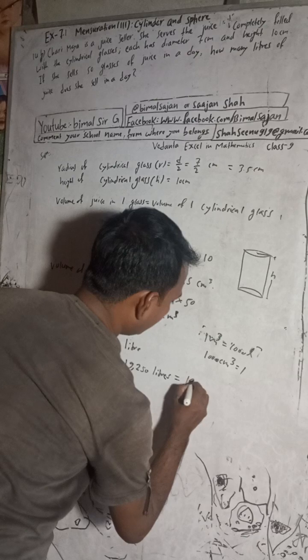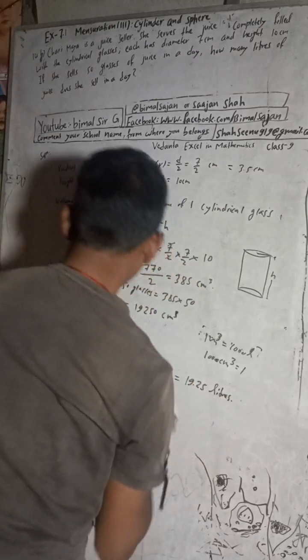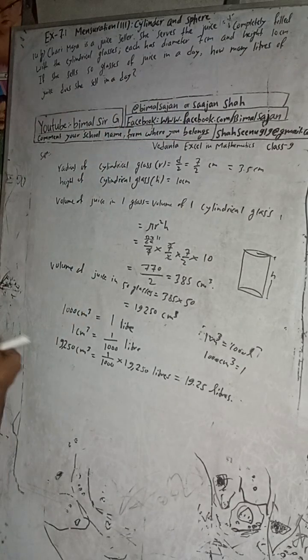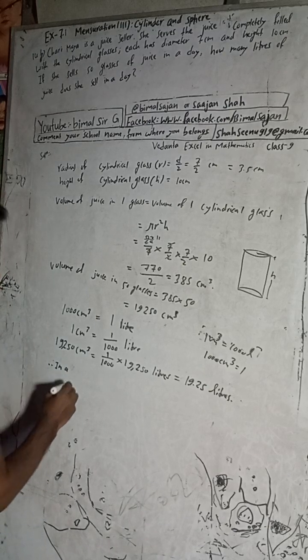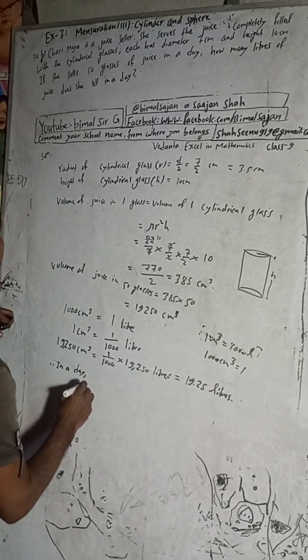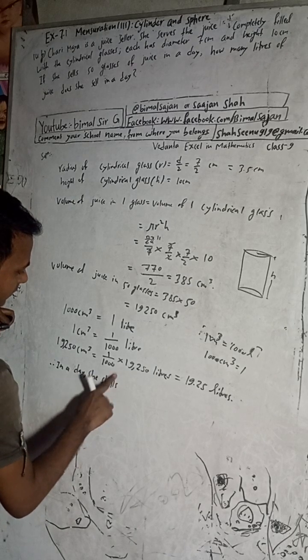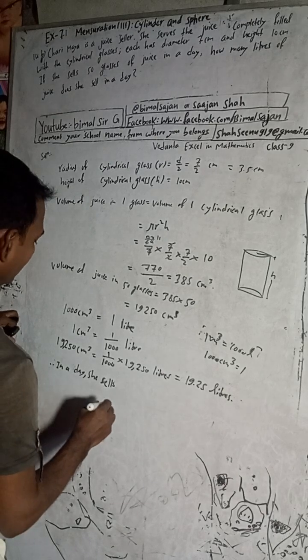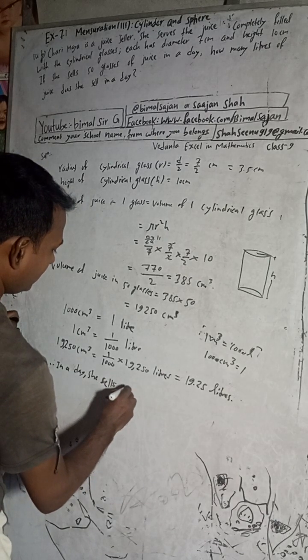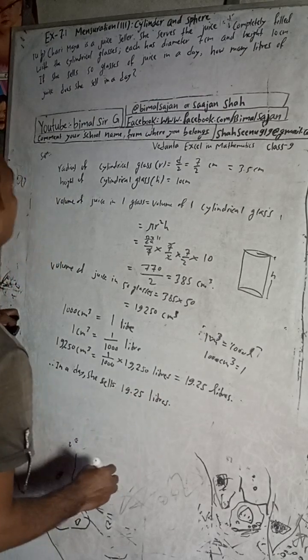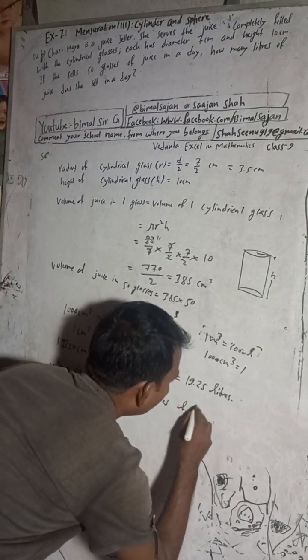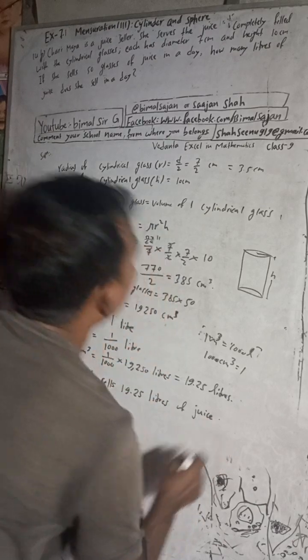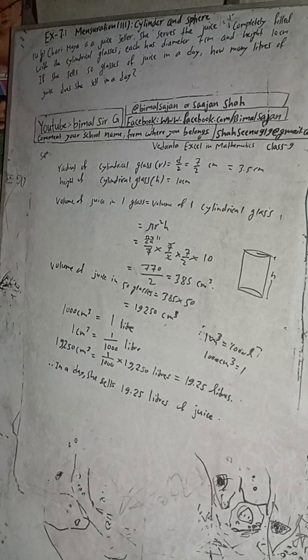Therefore, in one day she sells 19.25 liters of juice. The answer given in the book is 19.25 liters — this is correct, and our process is also correct.